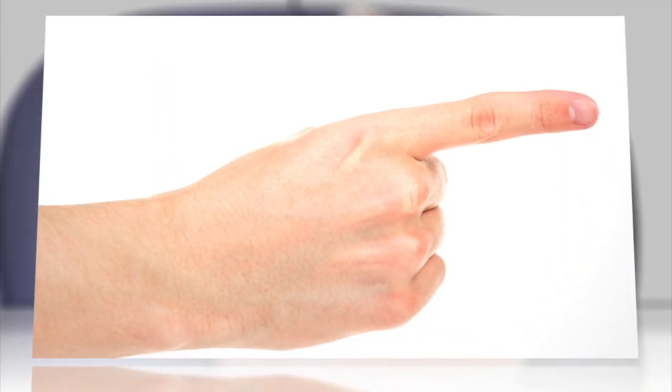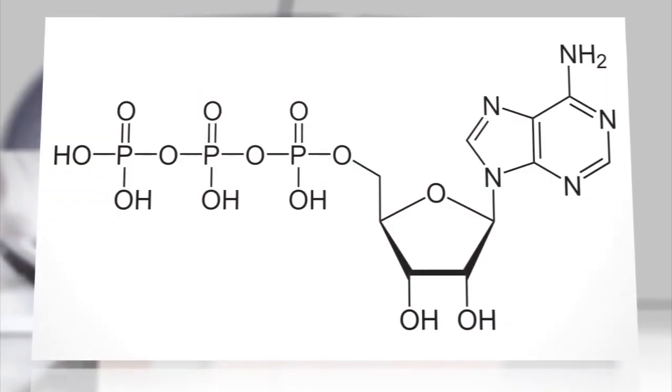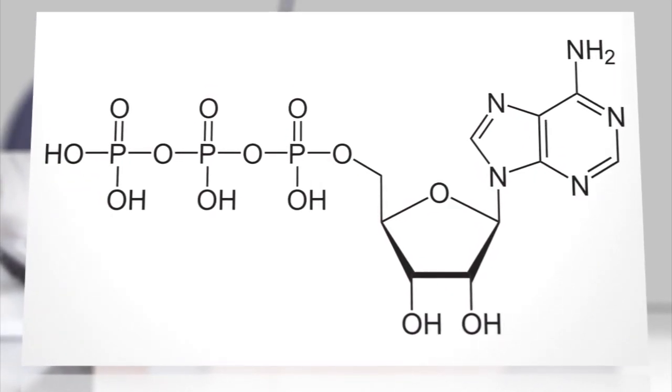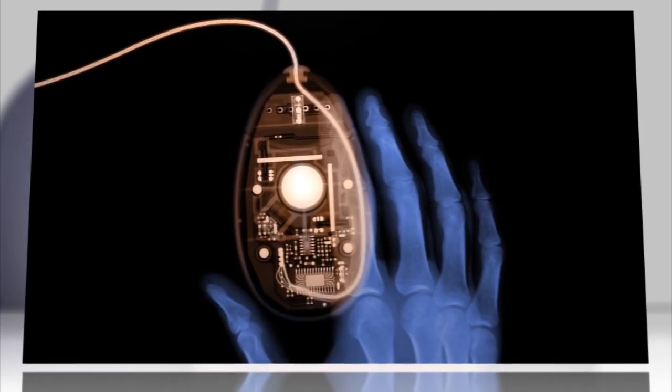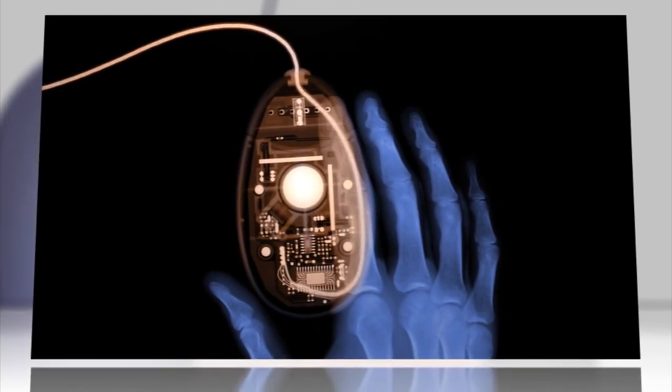They came to that number based on a typical index finger having a volume of 10.8 cubic centimeters with a weight of 11.7 grams, which should require 195 micromoles of ATP, or adenosine triphosphate, the molecule that transports energy in cells to move the index finger muscles per click.